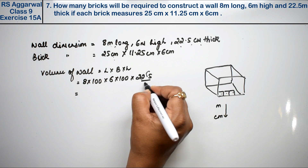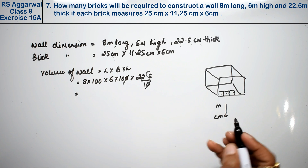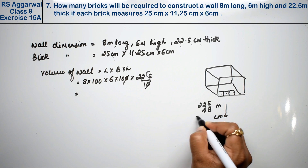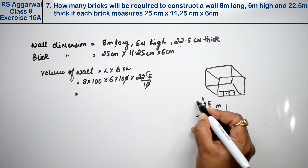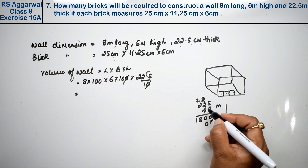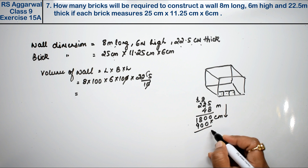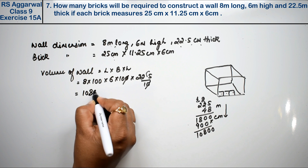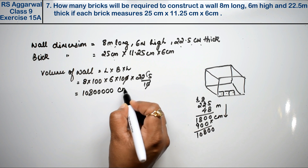So the volume of the wall is 800 into 600 into 22.5. We cancel the decimal: 225 into 10. Then 8 into 6 is 48, and 25 into 48: working through the multiplication, we get 1,008 — combining with zeros gives us 10,800,000 cubic centimetres. The unit is centimetre cubed.